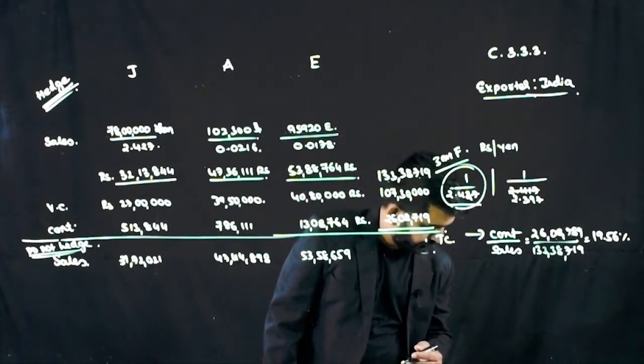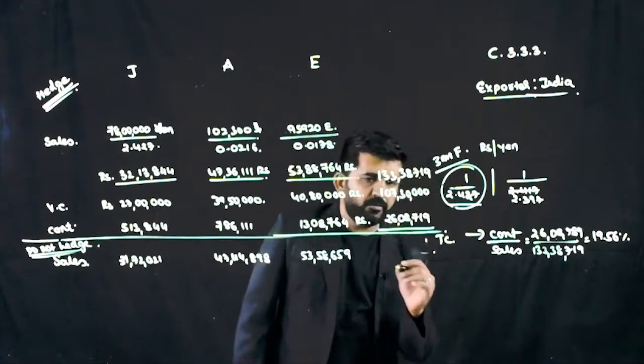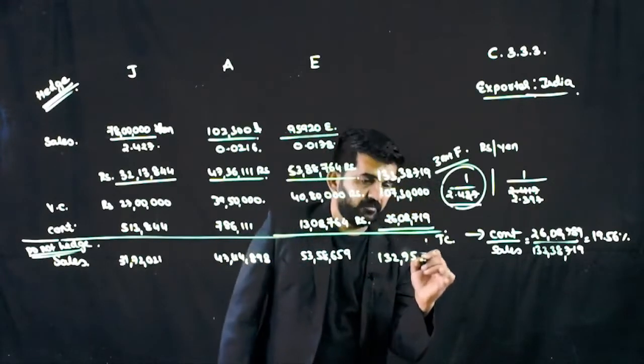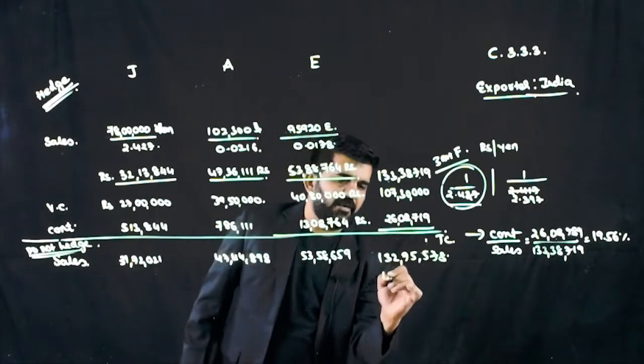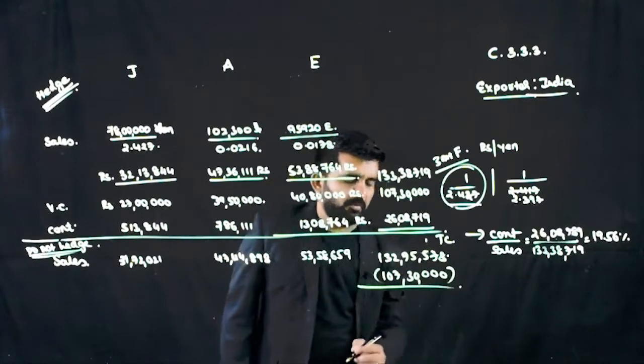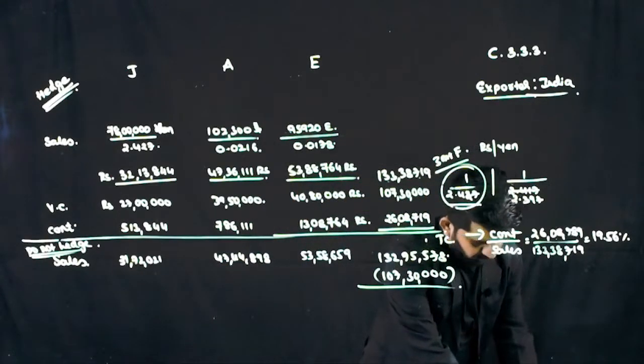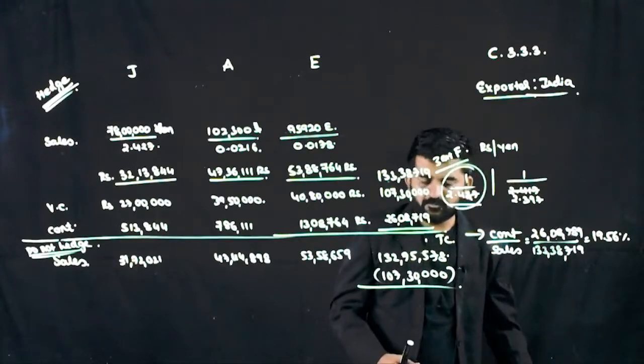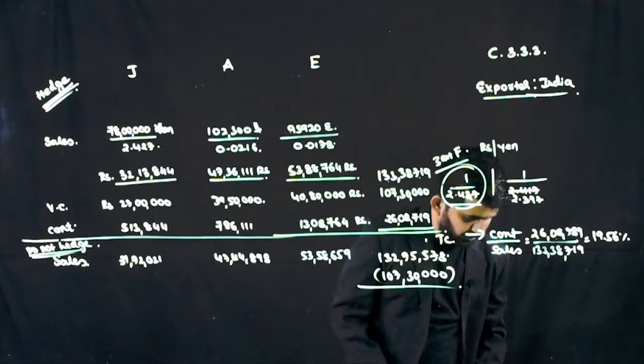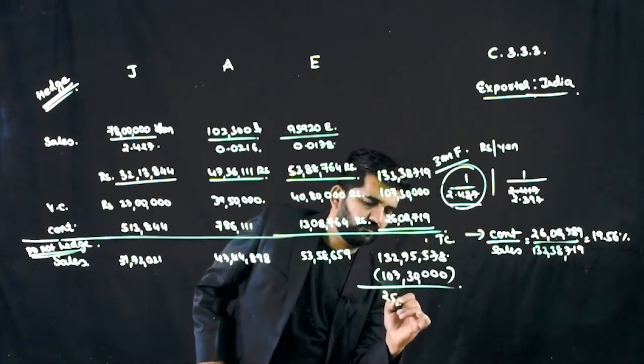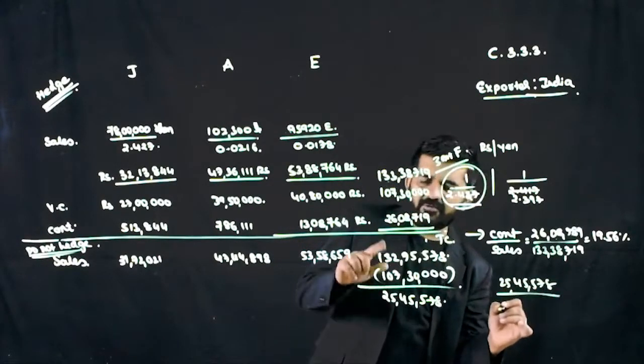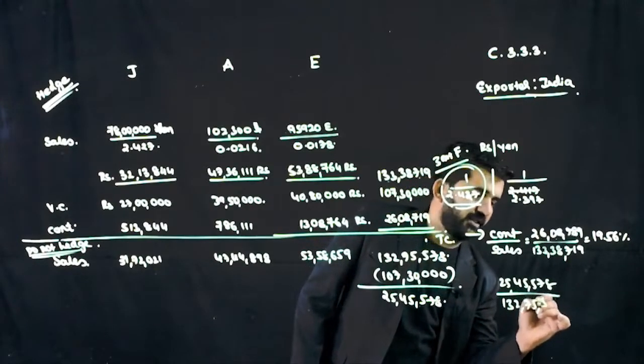And I will be getting total sales, which is 1 crore 32,75,578. Variable cost remains same, 1 crore 7,30,000. What will be my contribution is the difference. 1 crore 32,75,578 minus 1,07,30,000 is 25,45,578. Contribution to sales ratio will be 25,45,578 divided by sales is 1,32,75,578. This comes to 19.17%.